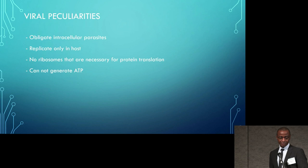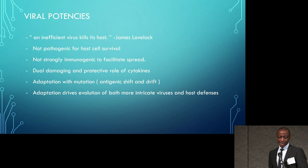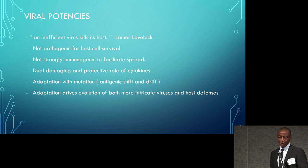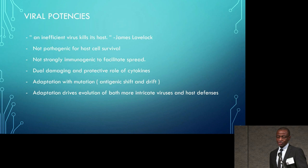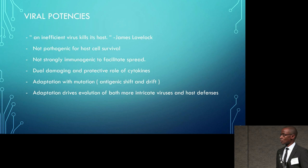Viruses that are most successful are primarily not significantly pathogenic, enabling host cell survival. They are not strongly immunogenic, facilitating their spread. Viruses also demonstrate adaptation with mutation — primarily antigenic shift, which occurs between species, and antigenic drift, which drives mutations we see in viral diseases. This adaptation leads to evolution of more intricate viruses and, on the other hand, more intricate host defenses.